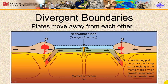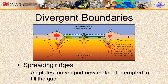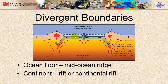Divergent boundaries are plates that are moving away from each other, and they can either be oceanic plates like the one shown here, or you can have a divergent boundary with continental plates. At a divergent boundary, as the plates pull apart, hot molten material — magma — rises up to the surface causing volcanic activity. When a divergent boundary is on the ocean floor, a mid-ocean ridge is formed.